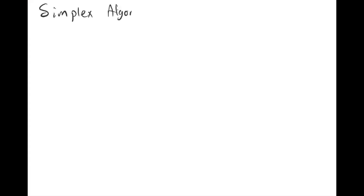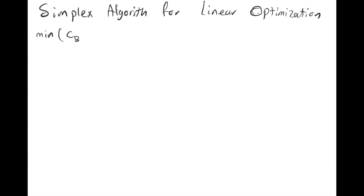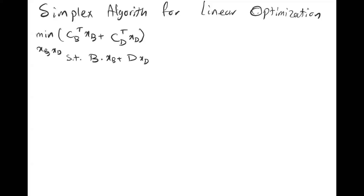In this lecture we are going to talk about the step-by-step implementation of the simplex algorithm for linear optimization. First, let's take a look at the generic form of this problem: minimizing c_B transpose x_B plus c_D transpose x_D, with variables x_B and x_D, subject to the constraint B*x_B + D*x_D = b, where all variables must be positive.